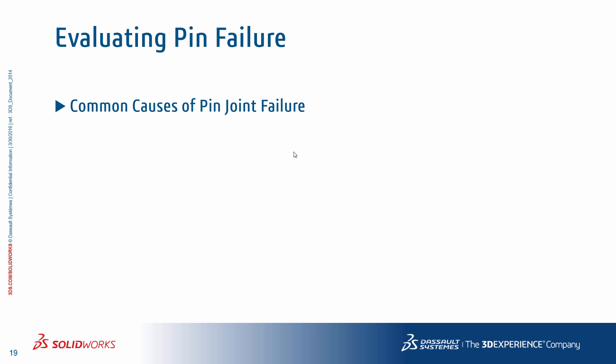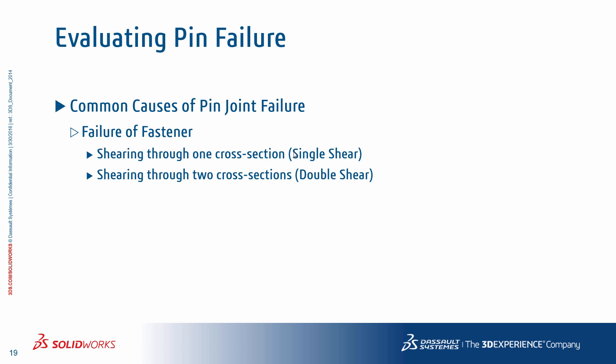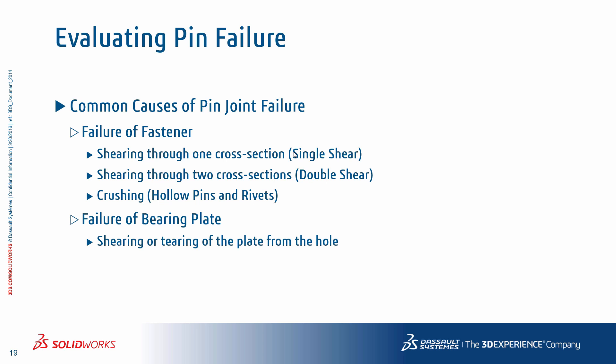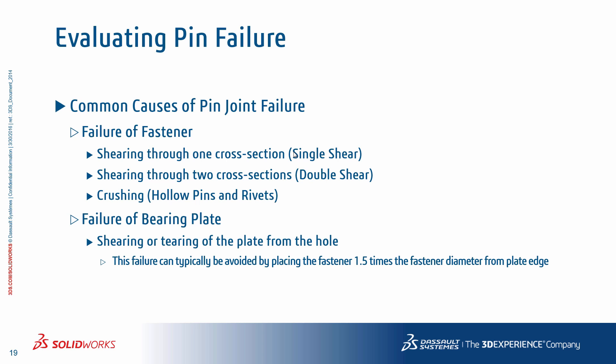Failure in a pin joint will involve failure of either the fastener or the parts being fastened. Fastener failure typically can be from shearing through one cross section — called single shear — or through two cross sections — called double shear — or it could be a crushing failure, especially in hollow pins and rivets. On the bearing plate, shearing or tearing of the plate from the hole is a common type of failure, which can typically be avoided by placing the fastener about one and a half times the fastener diameter away from the plate edge.